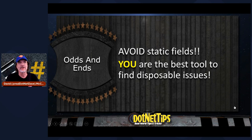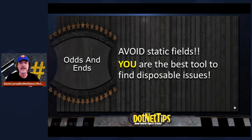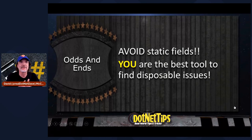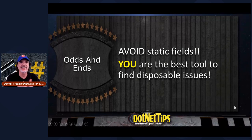Like I've said a couple of times during my session: you are the best tool to find these disposable issues. You are still the best tool to find all these issues. This needs to be on top of your mind whenever you're coding, whenever you're looking at code, whenever you're doing a code review — this has to be number one top of your mind, because this is how you bring down your apps. I would drill this into my C# beginners at the university because I wanted to make sure they understood it from the very first day they were learning how to code in C#. So you're the best tool.